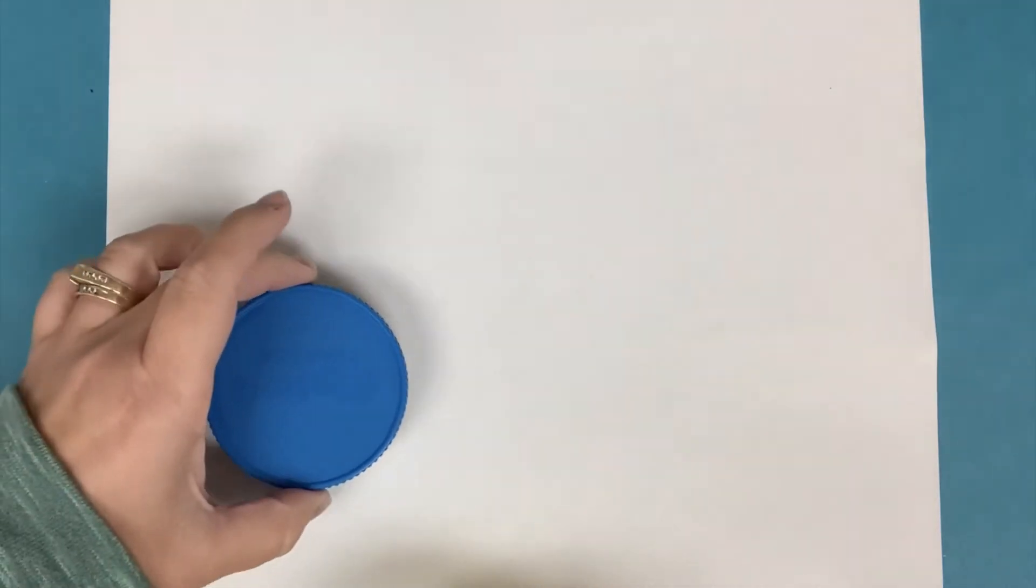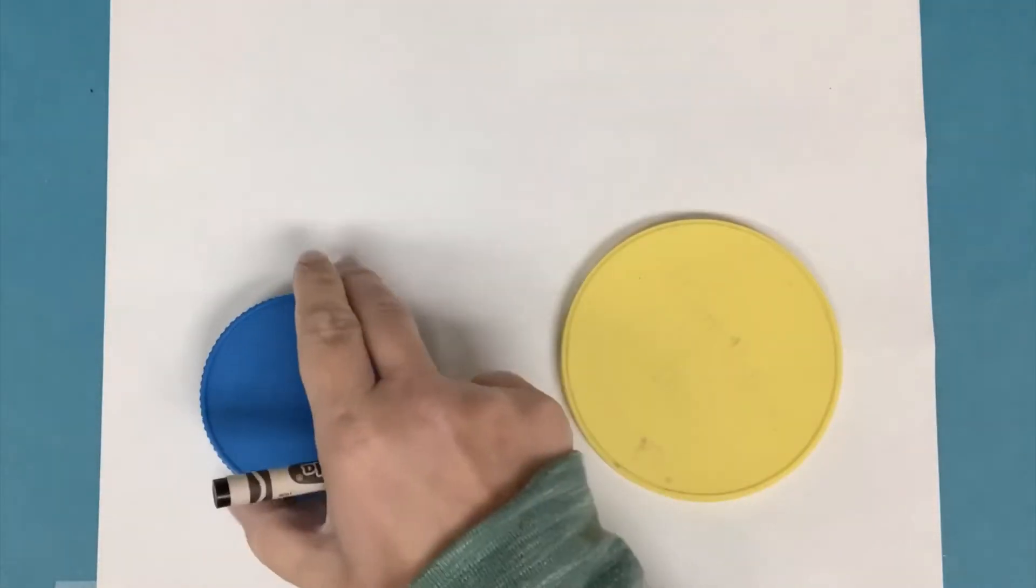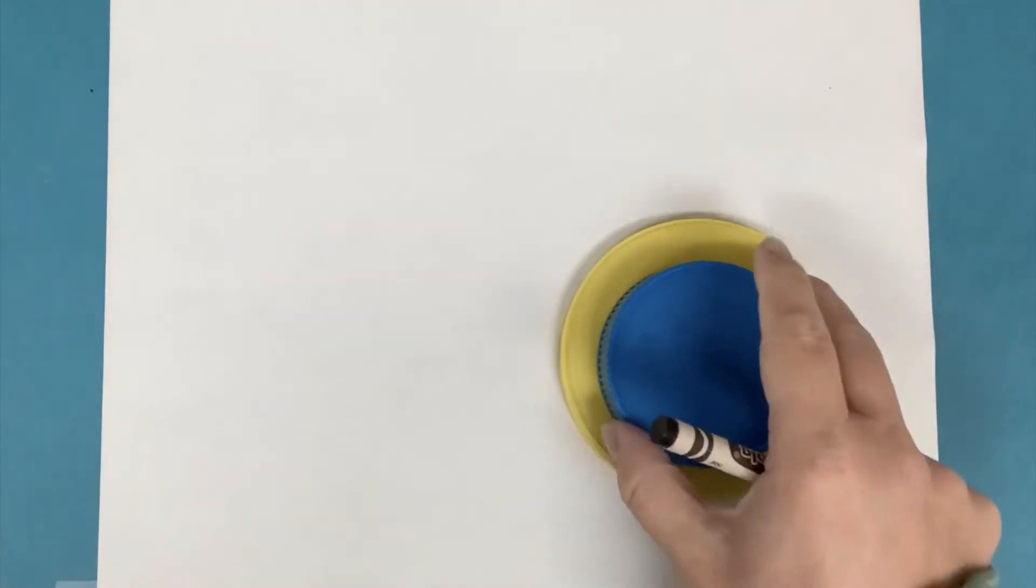Okay, let's get started. I'm going to take my two lids to begin. I have one lid that is smaller than the other. See that? One is smaller than the other.